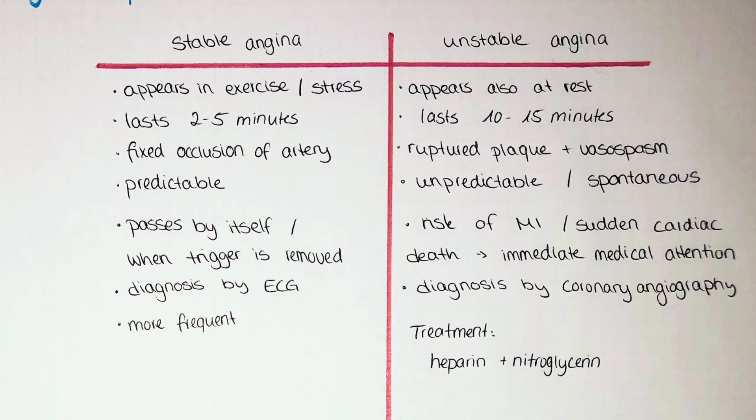Unstable angina appears suddenly while the patient is at rest or following normal daily activities. It lasts longer than stable angina, with a duration of approximately 10 to 15 minutes. Unstable angina is due to a ruptured plaque combined with vasospasm, which decreases the blood flow of the coronary arteries. The attack is unpredictable and spontaneous.